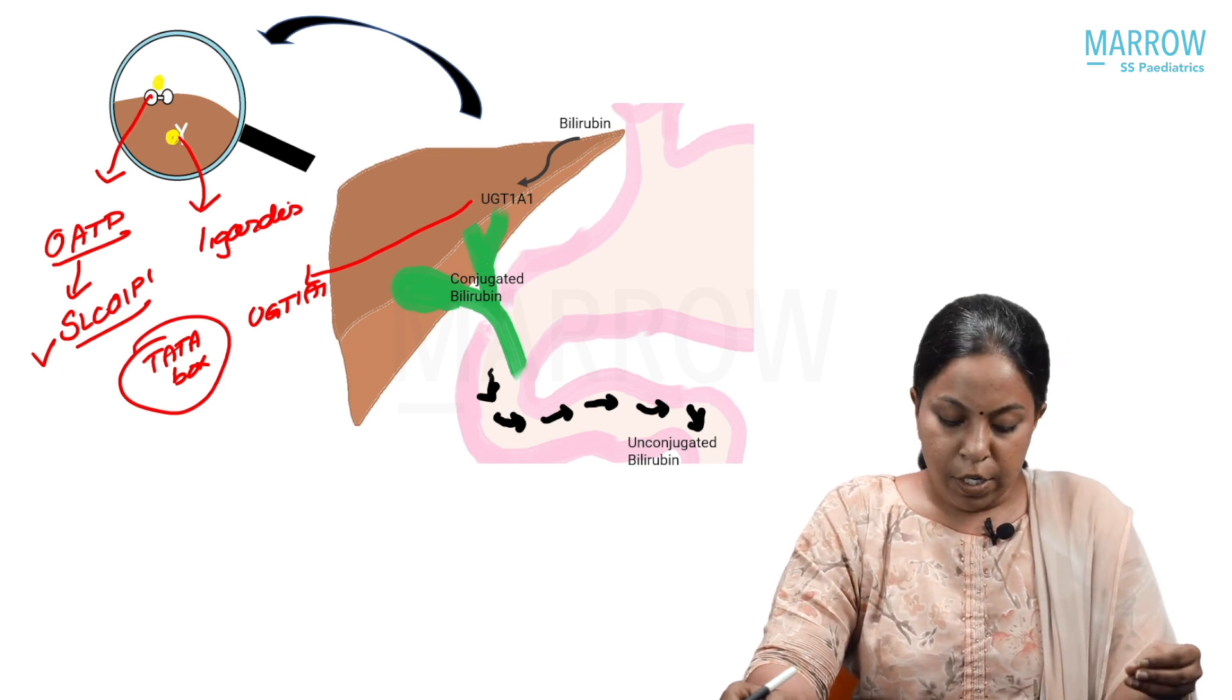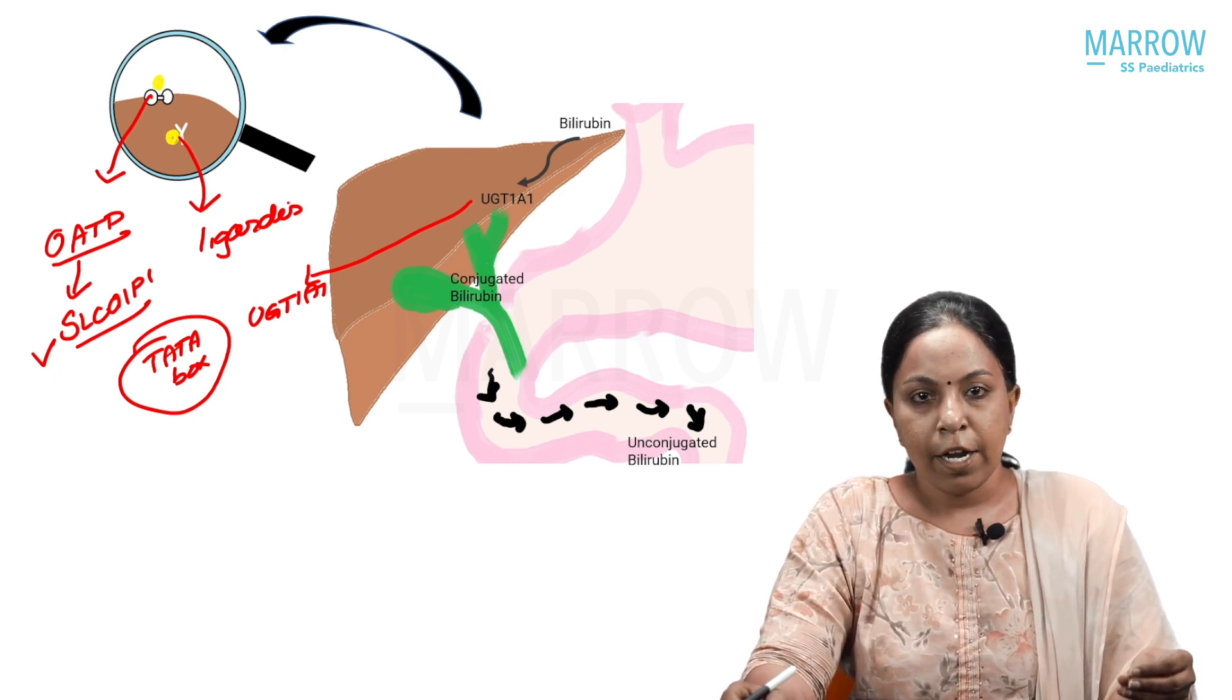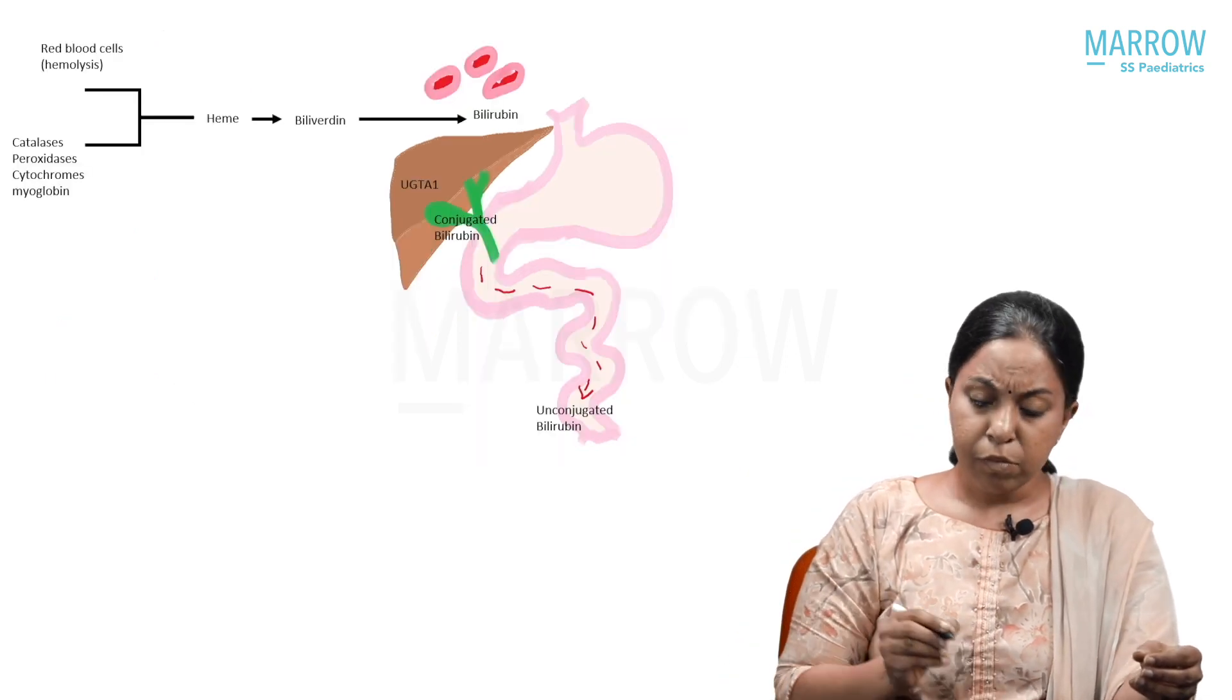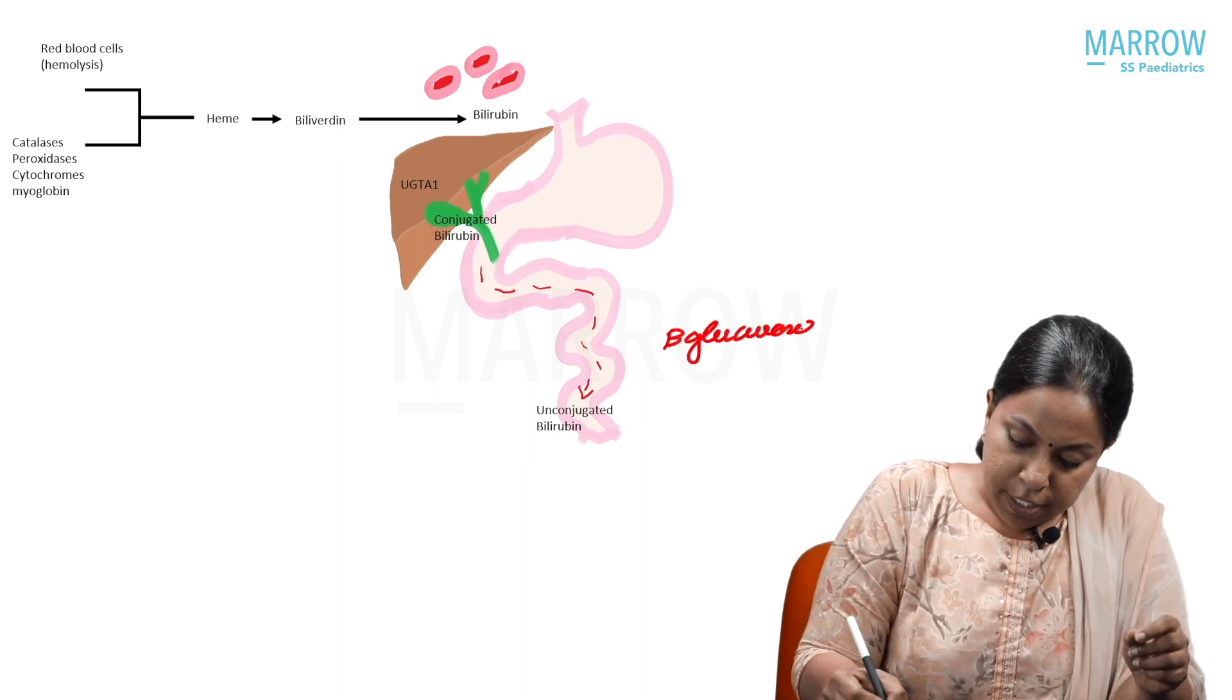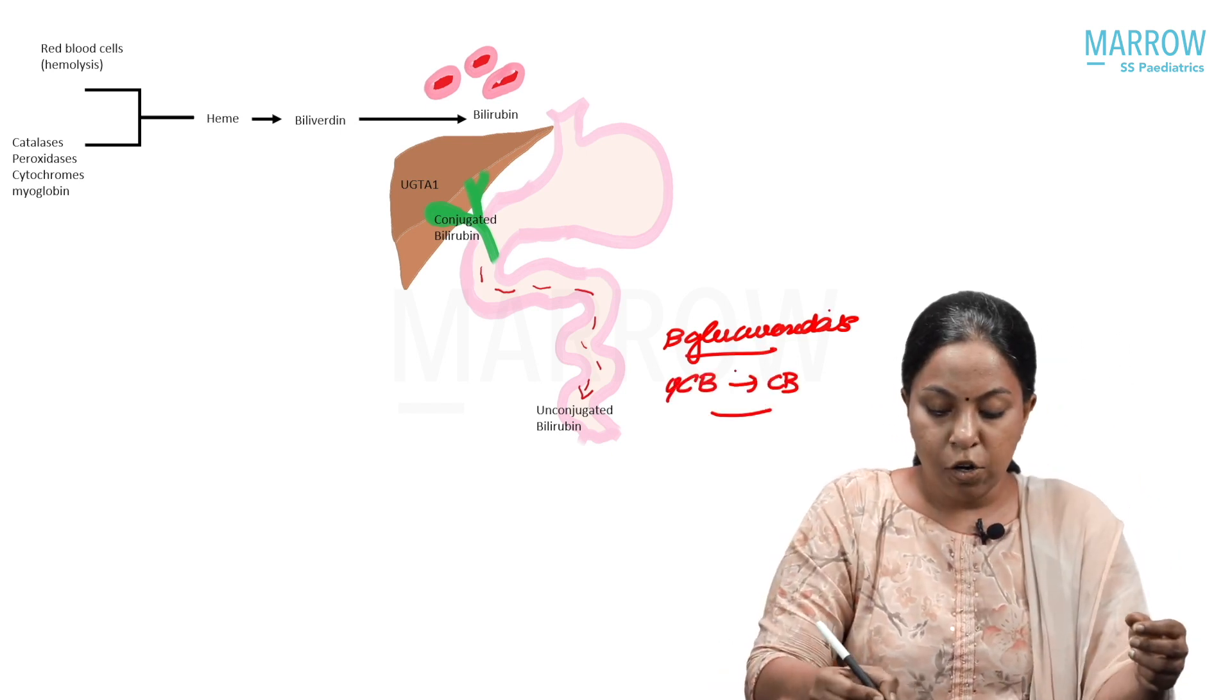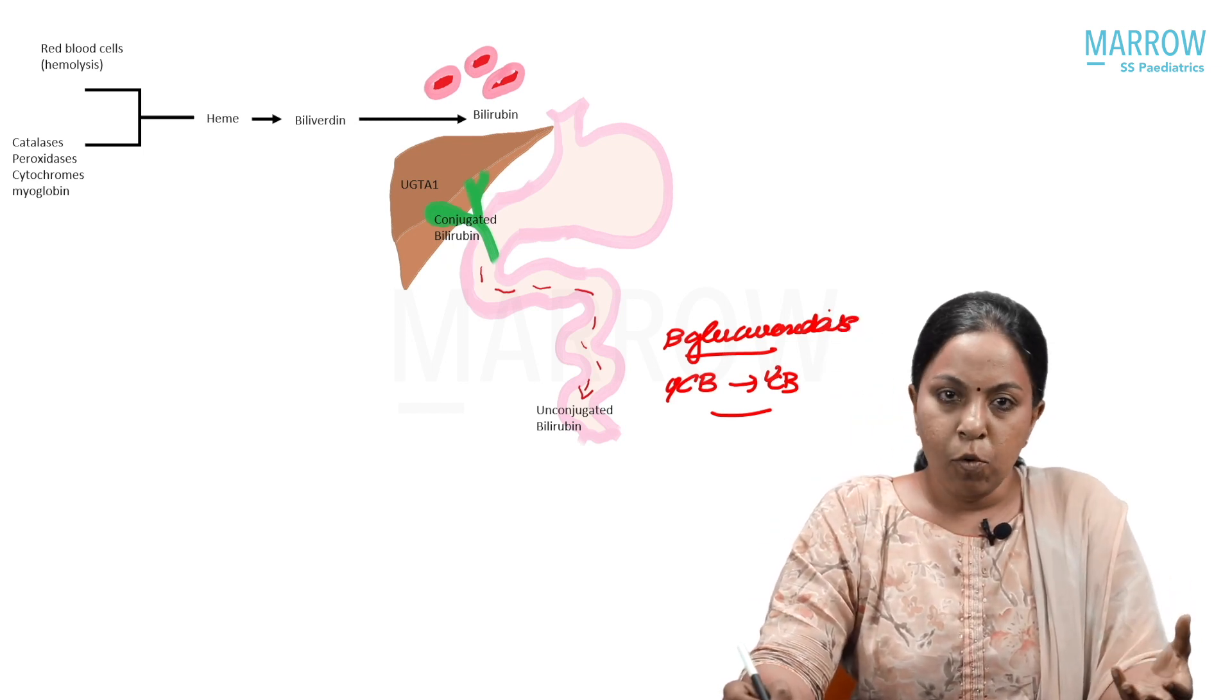Once the UGT1A1 enzyme acts upon the bilirubin, it is conjugated, it becomes water soluble, and thus as a part of bile, it is excreted into the intestinal lumen. In the intestinal lumen, there is an enzyme called beta-glucuronidase. This enzyme is going to convert conjugated bilirubin into unconjugated bilirubin, which can be reabsorbed into the circulation and contributes to the bilirubin pool again.